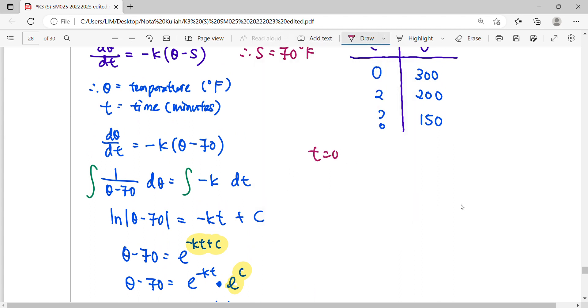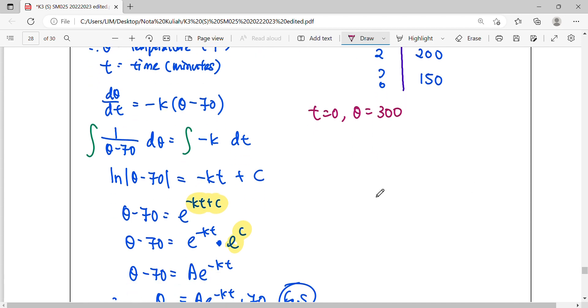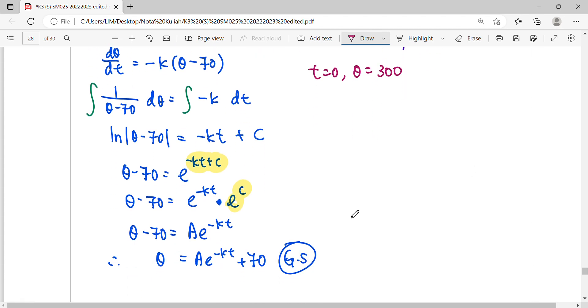When T equals 0, theta is 300. Substitute inside: 0 times anything becomes e^0, which is 1. So 300 - 70 gives us A = 230.